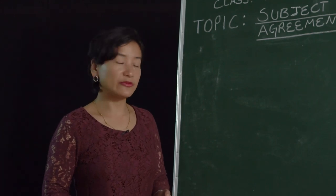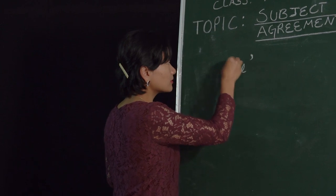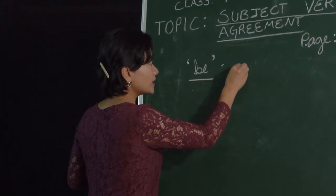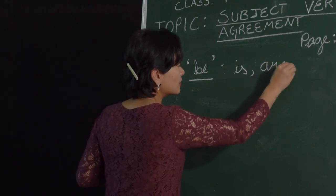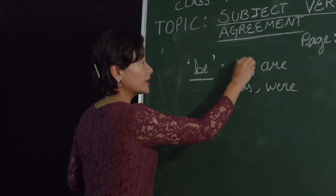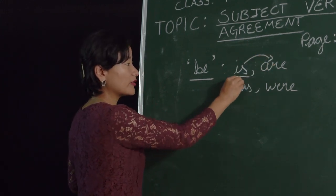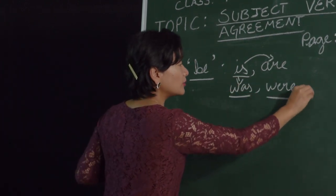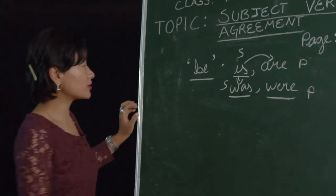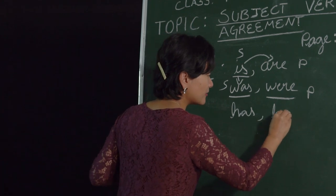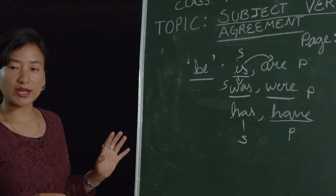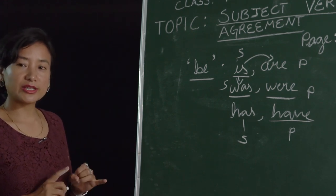Now let's come to the be verb. The base form is 'be,' and we can change this into helping verbs: is, are, was, were, and so on. The plural of 'is' is 'are,' and the past tense of 'is' is 'was,' while 'were' is its plural past. Be verb can also include 'has' (singular) and 'have' (plural). Remember, our subject has to agree in terms of number — whether it is plural or singular.